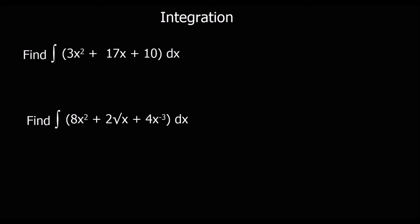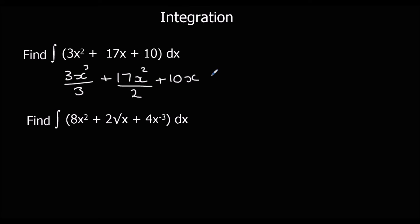Here's another few — pause the video and give them a go. So integrating: we're adding 1 to the power, dividing by the new power, and putting c on the end. 2 plus 1 is 3, divide by 3; x to the power of 1 goes to x squared, divide by 2; 10 goes to 10x. Plus c. 3 over 3 cancels, so we just have x cubed, plus 17 over 2 x squared, plus 10x, plus c.